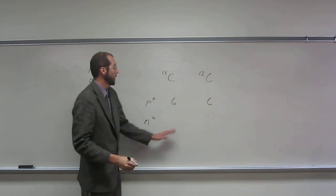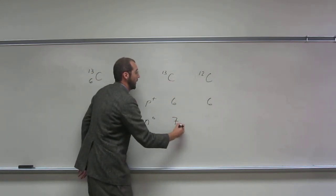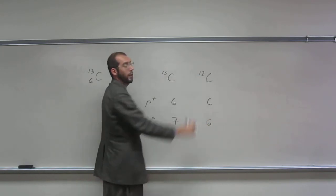So the number of neutrons, how many does this one have? Seven. And this one? Six. And why is that? Because these two numbers have to equal the mass number.